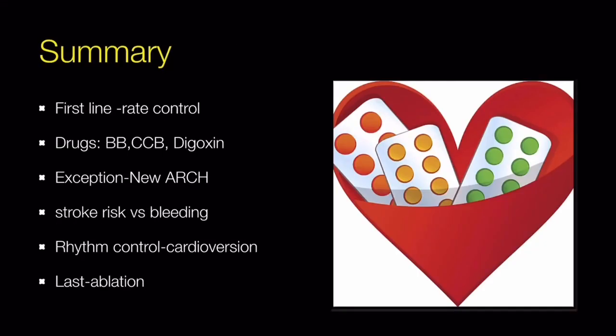In summary: the first-line option is rate control for every patient with AF. Drugs for rate control are beta blockers, non-dihydropyridine calcium channel blockers like verapamil and diltiazem, and digoxin in sedentary patients. Exceptions are the NEW ARTS cases and failed rate control. Always compare stroke risk versus bleeding risk using CHA₂DS₂-VASc and ORBIT scores. In rhythm control, the first-line option is DC cardioversion, followed by pharmacological cardioversion. If medical management fails or is contraindicated, the last option is ablation. Thank you for watching — please subscribe to the channel.